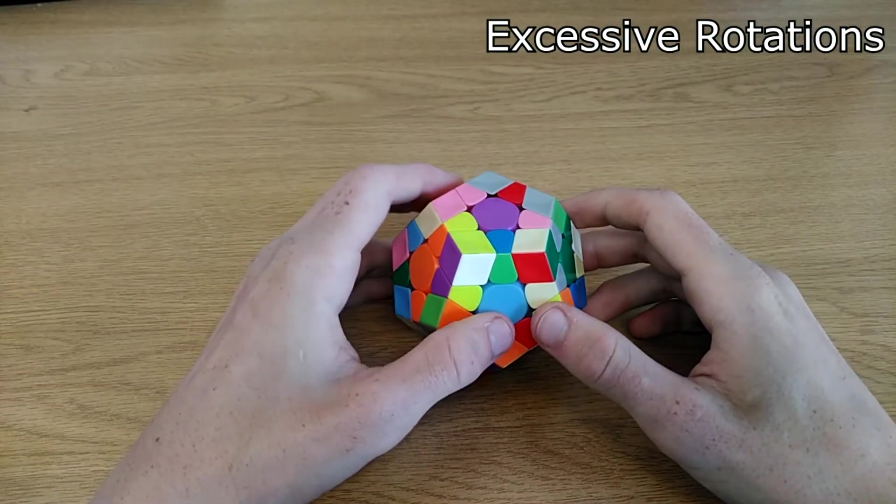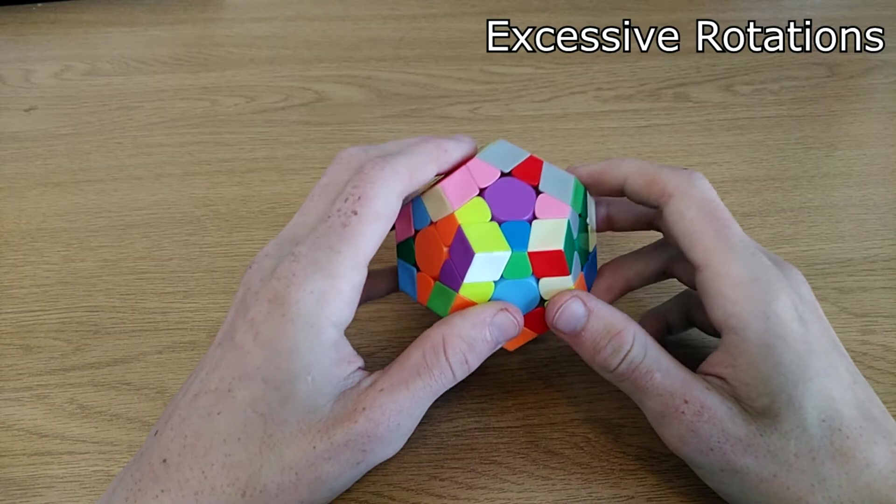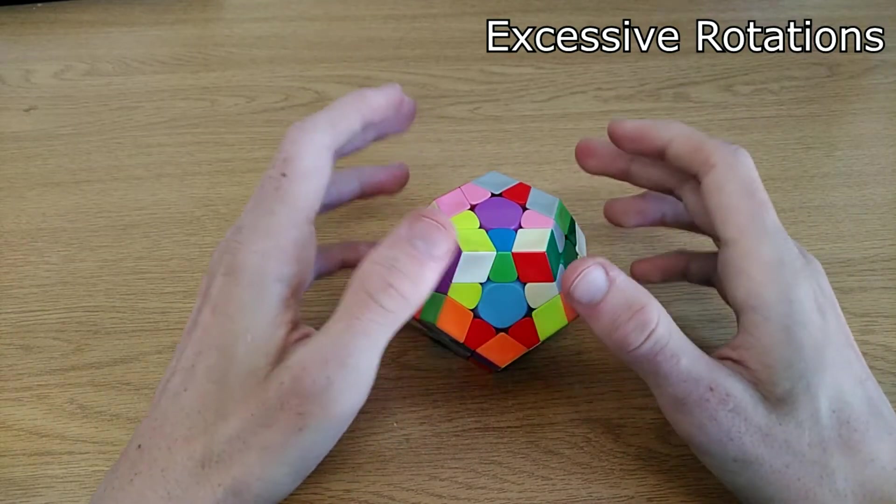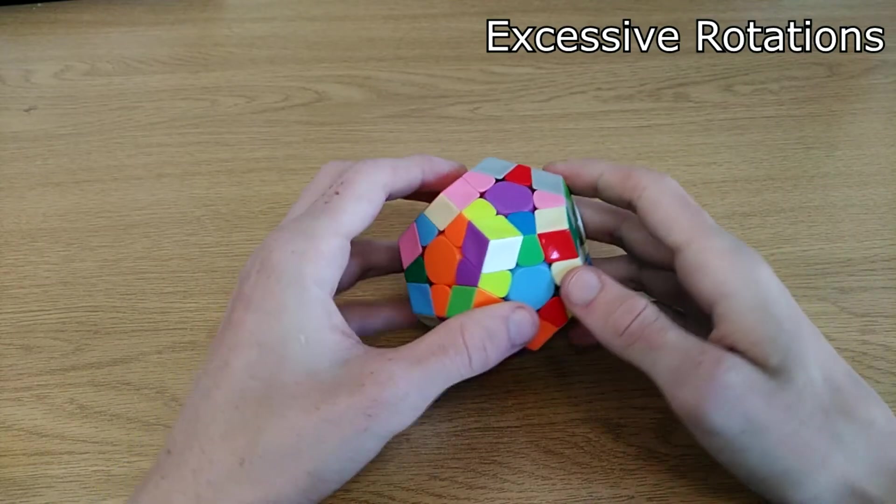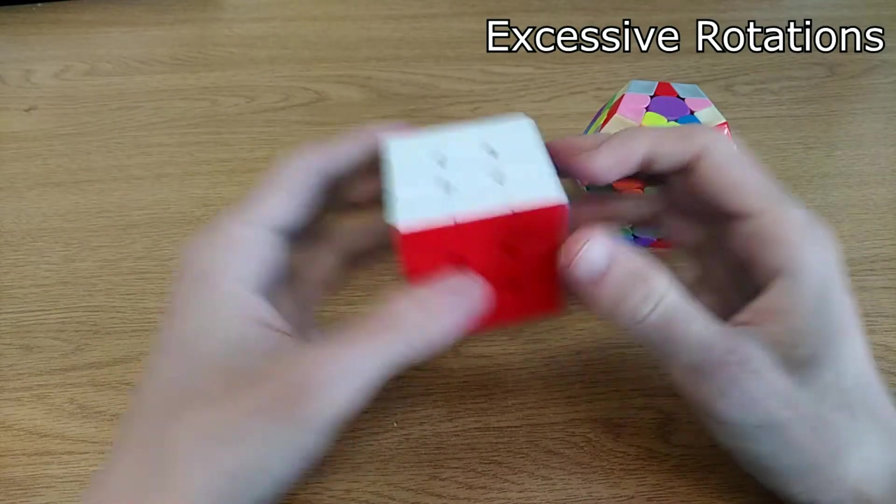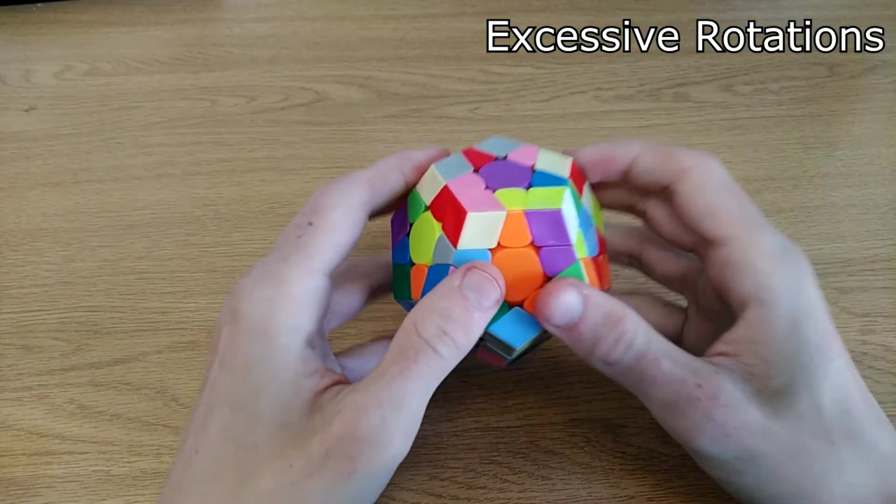Number 2: Excessive rotations. This is by far the most important thing to avoid in my opinion. One rotation doesn't take that long, but when you do them excessively then it starts to add up. Rotations on a Megaminx take longer than let's say on a 3x3 because of the grip, so it's best to avoid them.